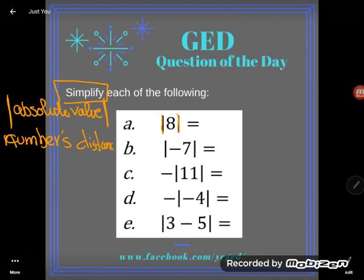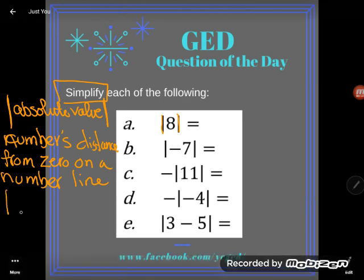Now it sounds like kind of a silly definition because people will say to me well isn't the number like if it's five, five is five away from zero right? It doesn't do much and I'm like well yeah it won't do much for positive numbers. You're right.